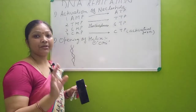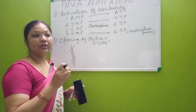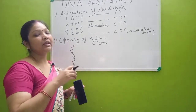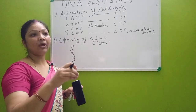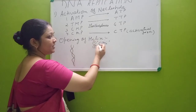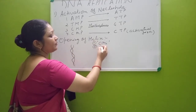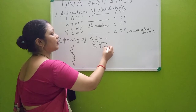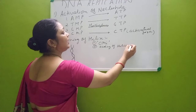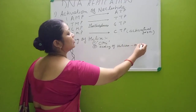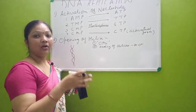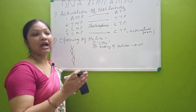In eukaryotes, there is more than one ori present in one DNA molecule. The helicase enzyme joins at the ori, and the second step — binding of helicase to ori — takes place.